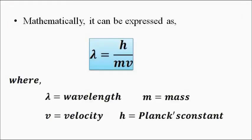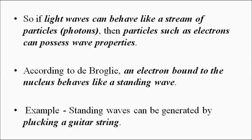As per the de Broglie hypothesis, matter exhibits both wave-like as well as particle-like properties. Mathematically, for any given particle, the wavelength representing the wave-like characteristics of that particle is given by λ = h/mv, where lambda is the wavelength, m is the mass, v is the velocity, and h is Planck's constant. Applying this to electrons, de Broglie gave an explanation that an electron orbiting the nucleus in a circular path behaves like a standing wave, also called a stationary wave.